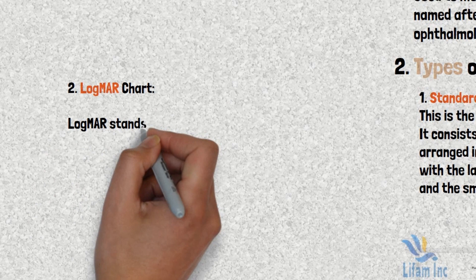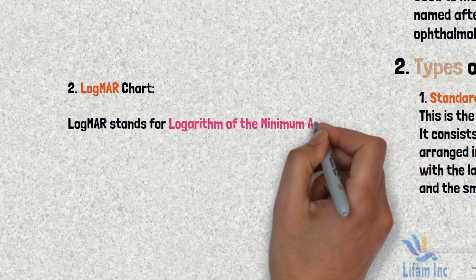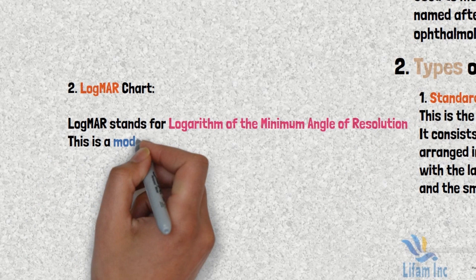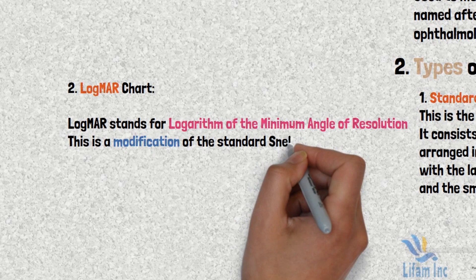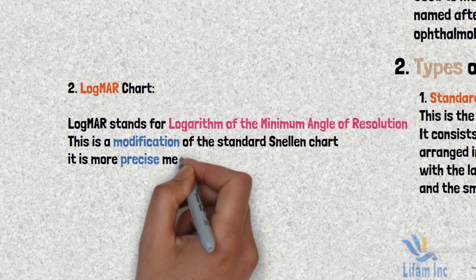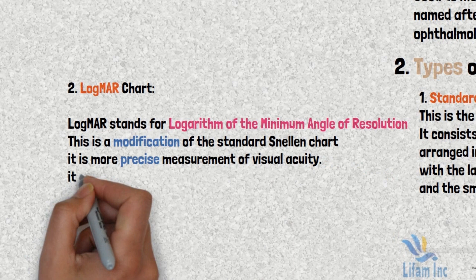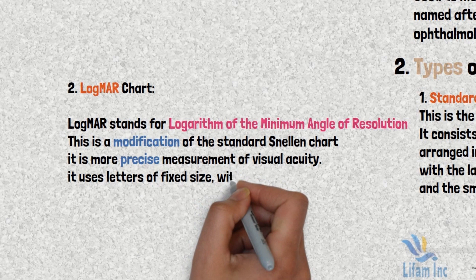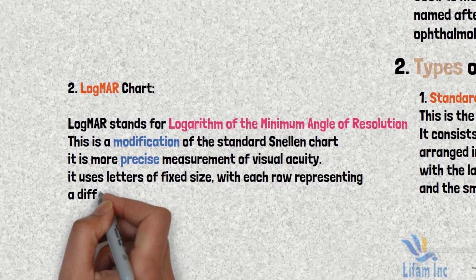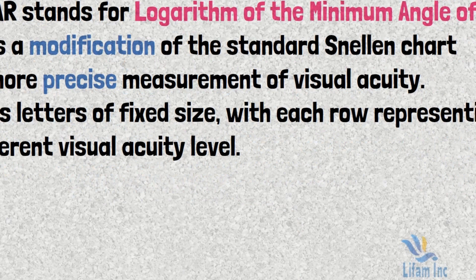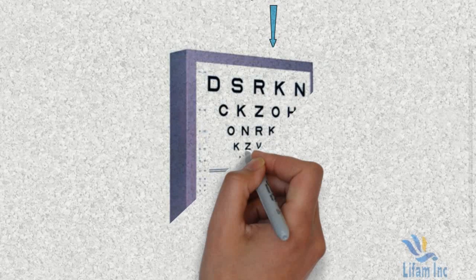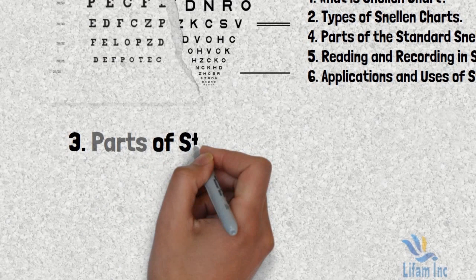The second type is called the LogMAR chart, which stands for Logarithm of the Minimum Angle of Resolution. This is an improvement of the standard Snellen chart with a more precise measurement of visual acuity. It also uses letters or figures arranged in a decreasing manner, but the size of the letters is fixed and consistent.